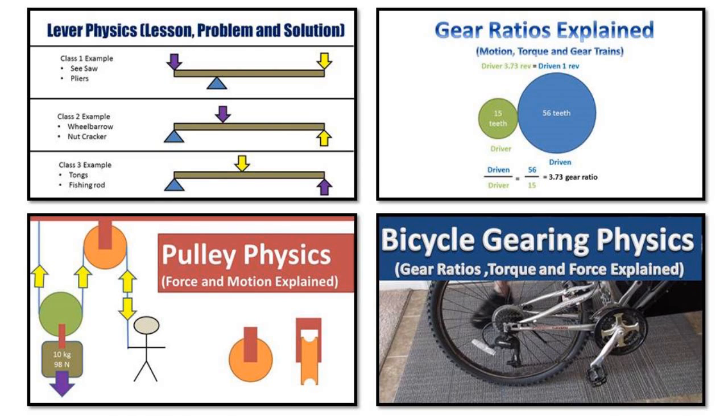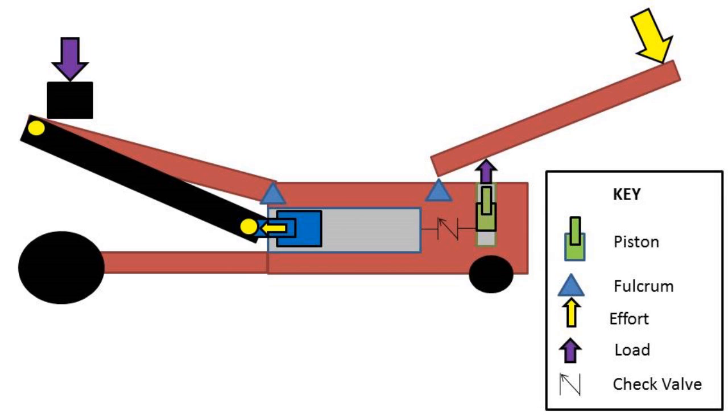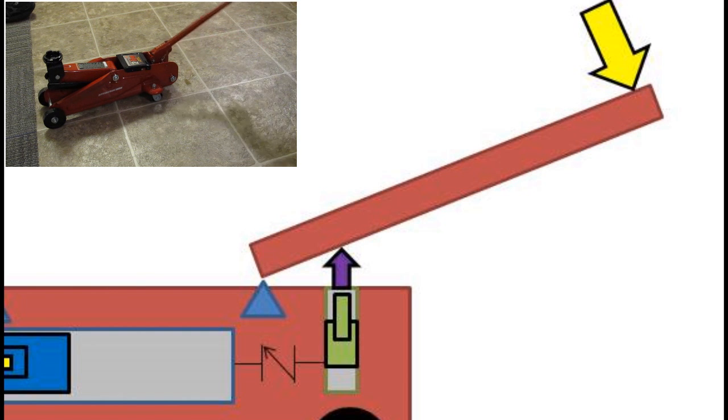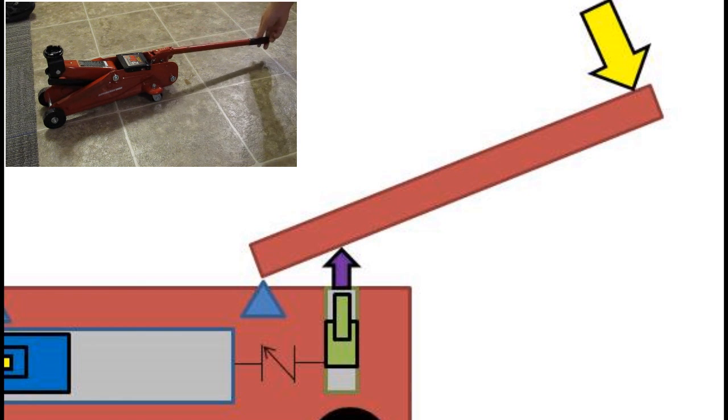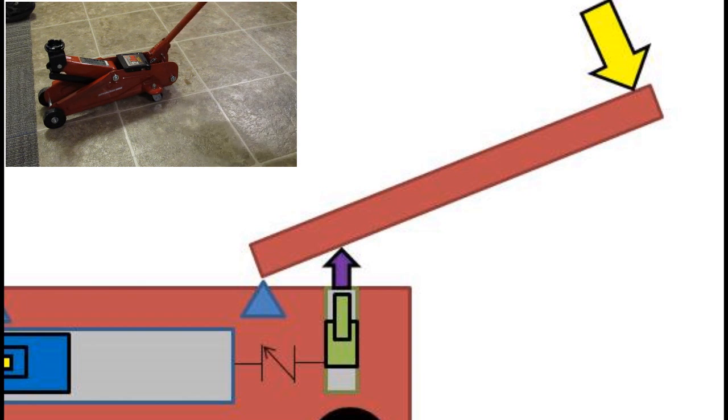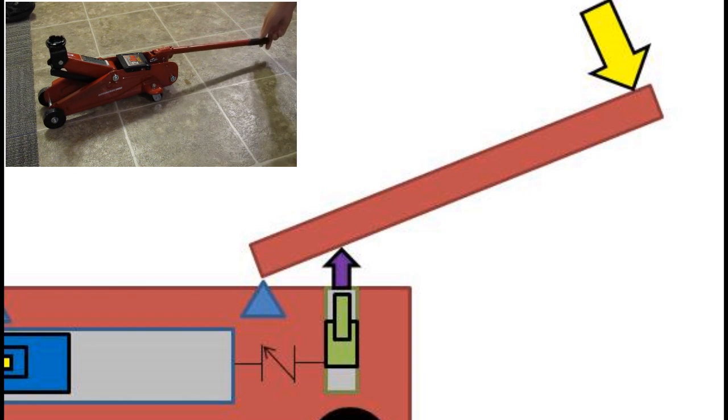In previous videos we went over other simple machines. So let's begin by going over how the hydraulic trolley jack works. The way the hydraulic trolley jack works is you pump the lever arm which is a second class lever. This lever drives down the small piston which pumps hydraulic fluid through a one-way valve also known as a check valve.